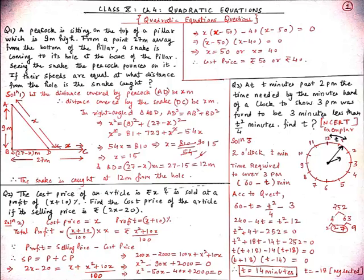Using the splitting-the-middle-term method, we write: x² − 50x − 40x + 2000 = 0. Taking x common from the first pair gives x(x − 50), and taking −40 common from the second pair gives −40(x − 50). So the two factors are (x − 50) and (x − 40). Equating to zero gives x = 50 or x = 40. Therefore, the cost price of the article is either Rs. 50 or Rs. 40.